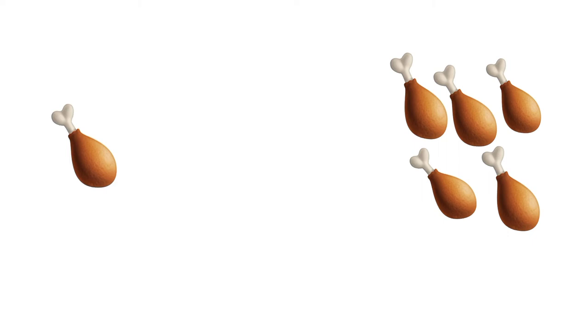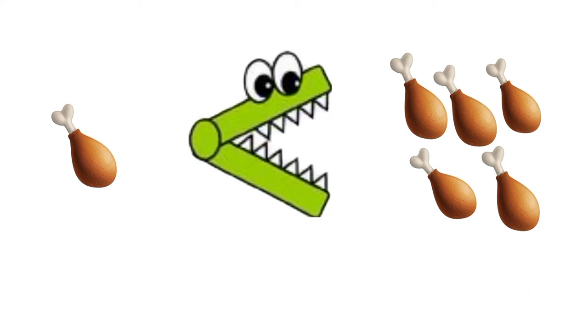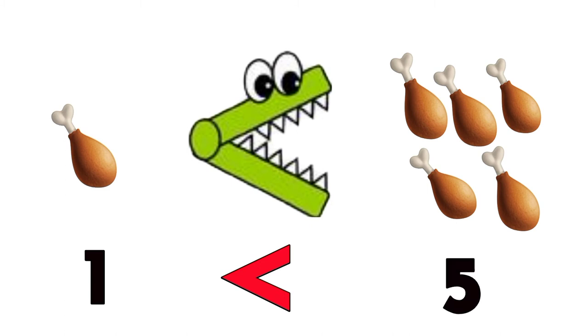How about these sets of fried chickens? The set at the left has 1 and the set at the right has 5. Definitely, the hungry alligator would like 5 fried chickens because it has more. So, we say that 1 is less than 5.